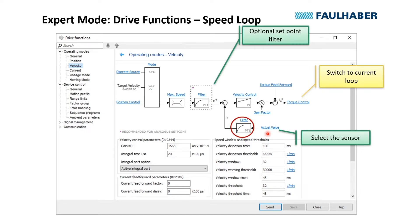And for experts, there are additional filters, optional ones, that can be used to fine-tune the behavior. And then of course again select either a discrete source for the reference like an analog input, or switch to the position loop.